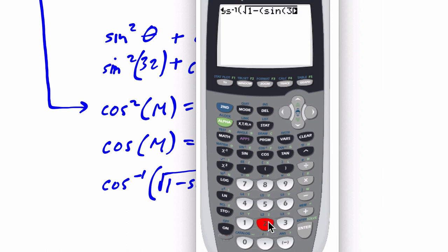So sine of 32. I'm going to see the bar is expanding here with what I type. And then close parentheses. And I'm going to square that value because I'm squaring the whole thing. I'm not squaring 32. I'm squaring the sine of 32. If I hit enter, I get 32.